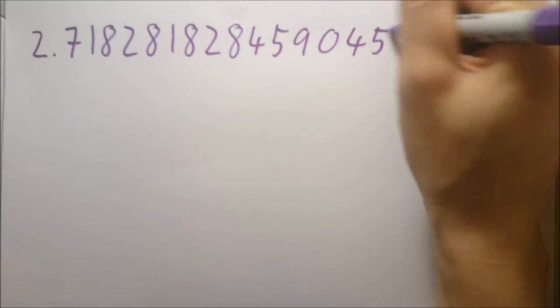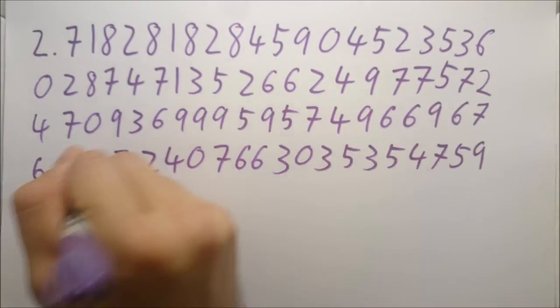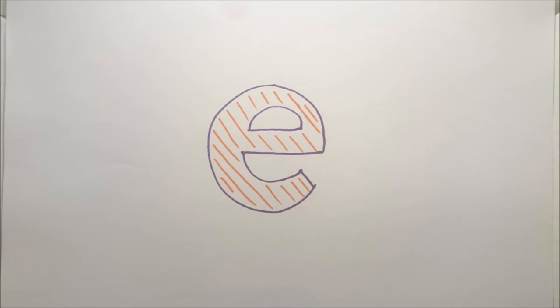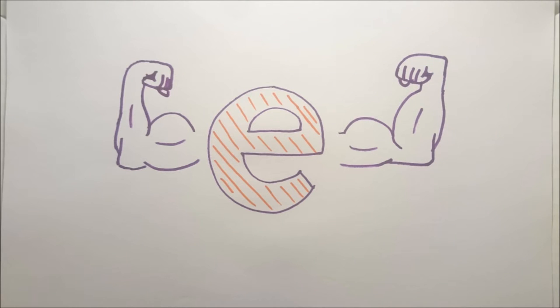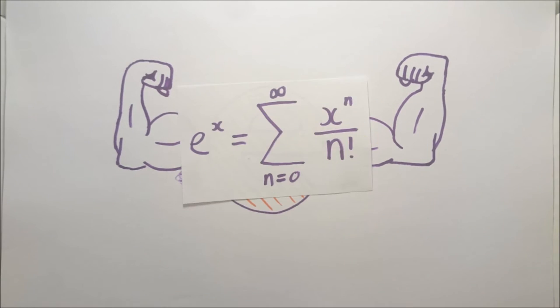E is Euler's constant which is equal to 2.71828182845984... This is a special irrational number popping up in lots of areas in mathematics. We can express e to the x as the sum from n equals 0 to infinity of x to the n over n factorial. Proof omitted.